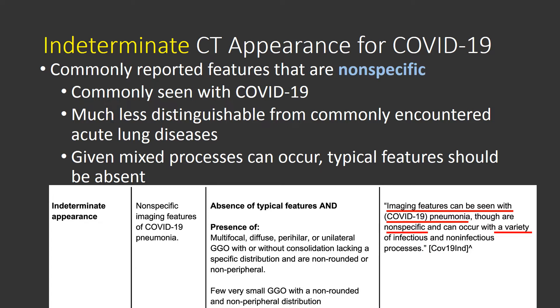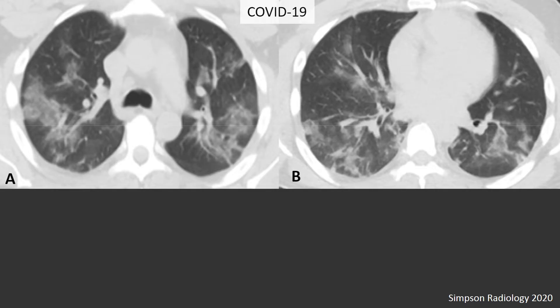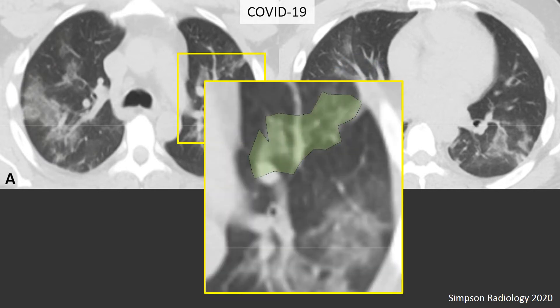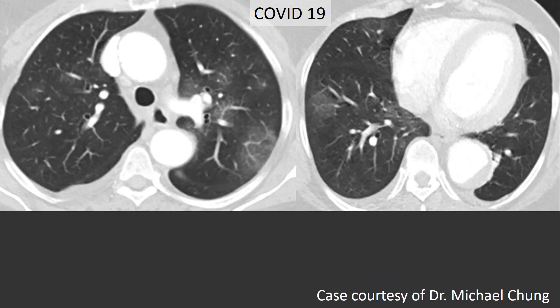Again, COVID-19 is in parentheses. Indeterminate CT features in someone who tested positive for COVID-19 may demonstrate multiple bilateral ground glass opacities without a clear distribution — not clearly peripheral and not clearly central — with a non-rounded morphology. Another case shows patchy bilateral ground glass opacities without a clear rounded morphology and non-peripheral distribution.